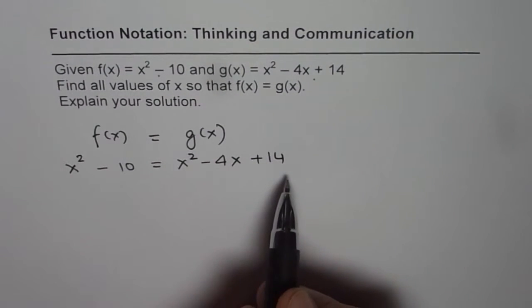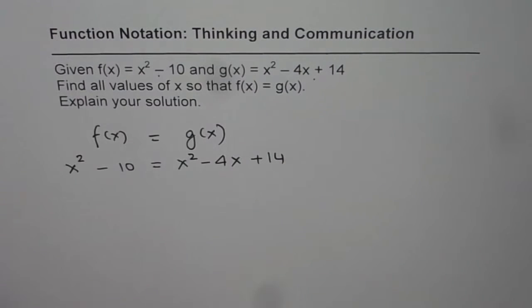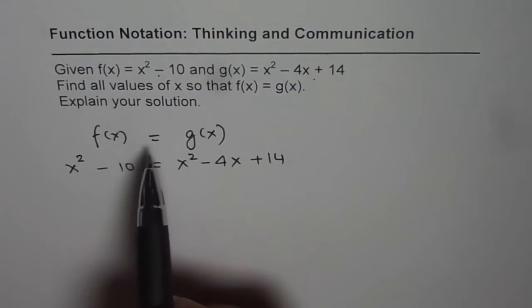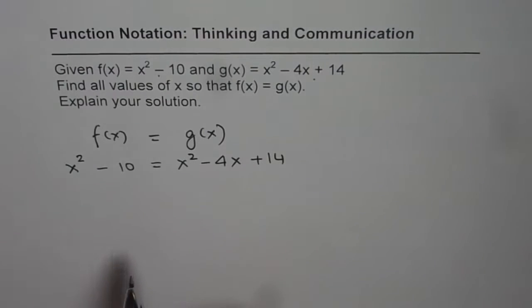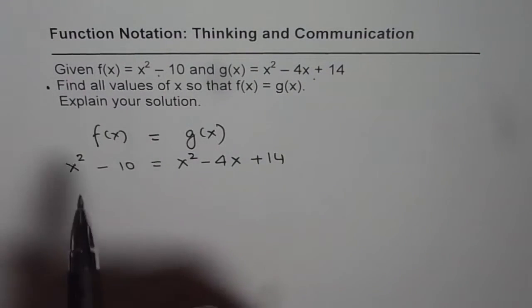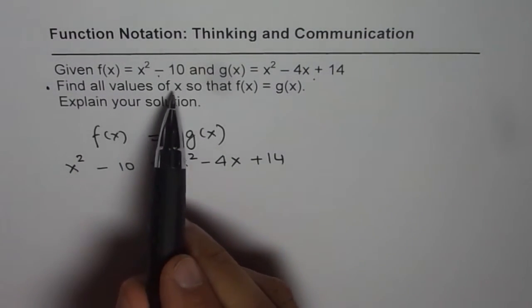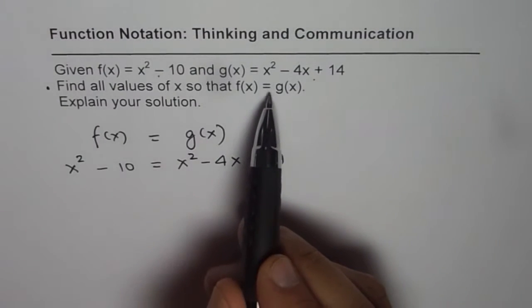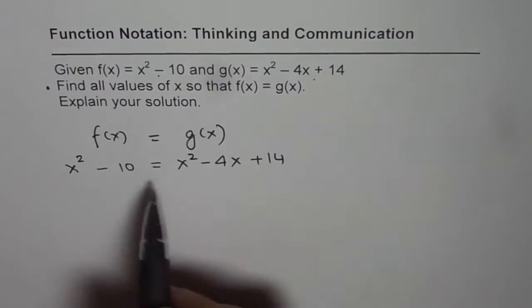Solving this equation, we will get the values of x for which f of x is equal to g of x. That is what we will do when we say find all values of x so that f of x equals g of x. Let us solve it.